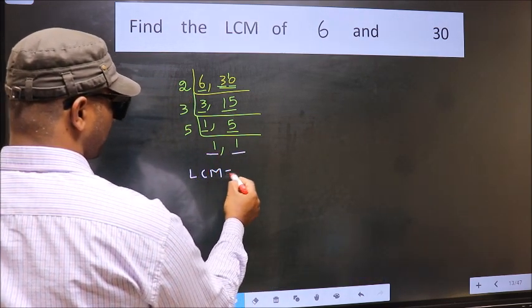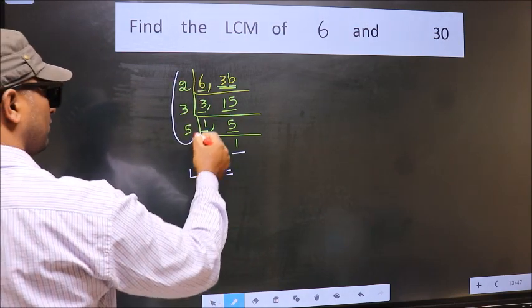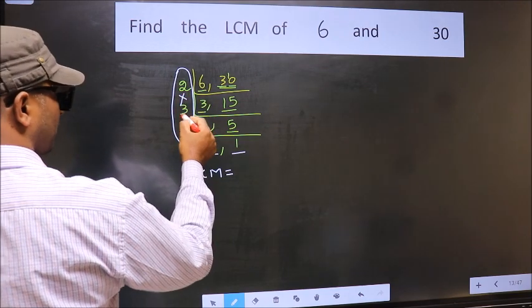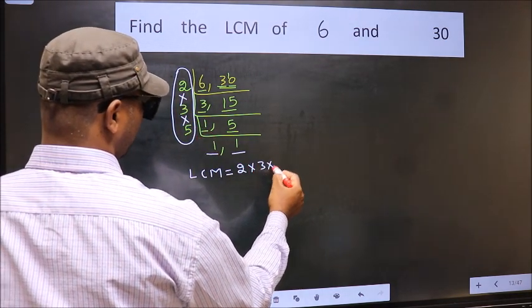So our LCM is, LCM is the product of these numbers, that is 2 into 3 into 5.